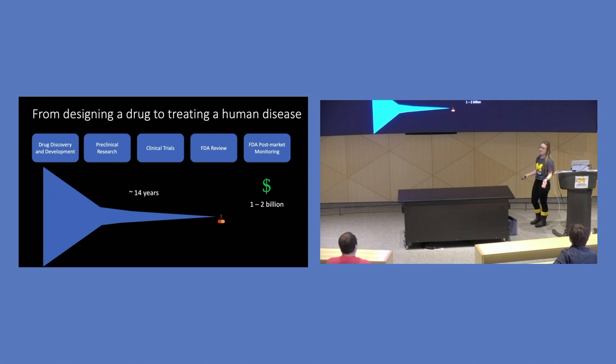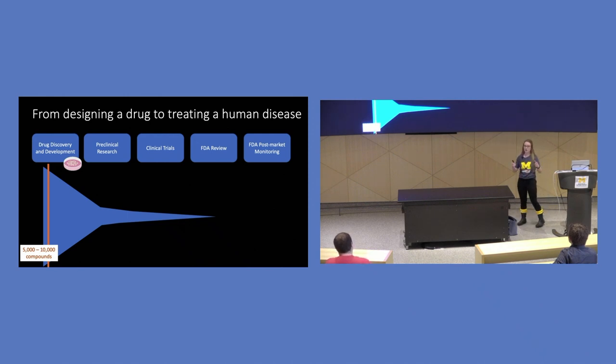Just to quickly go through these different steps. Initially we start with drug discovery and development. So you want to try to find some kind of chemical or compound that will target the disease in some way. So in the case with cancer, we would hope to stop those cells from dividing or potentially just kill the cancer cells altogether. So if we have a drug that does that, great. We can move on to the next step in preclinical research.